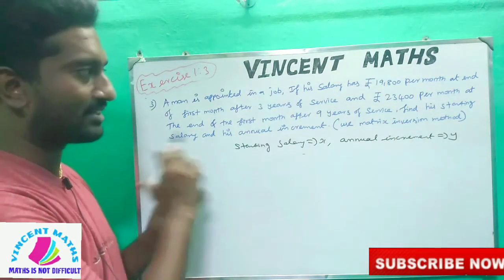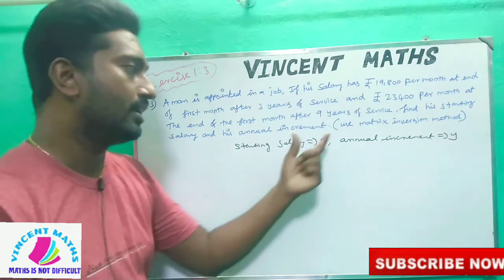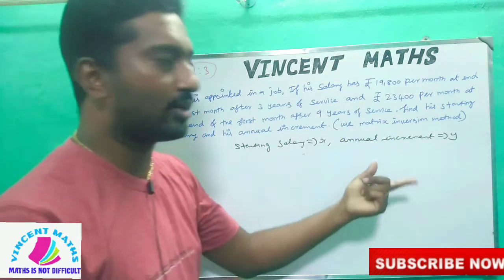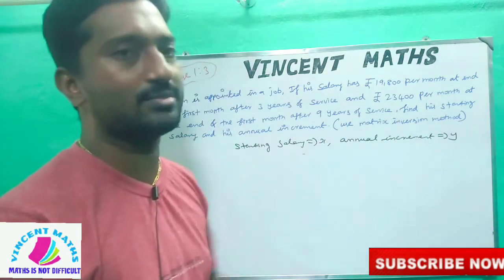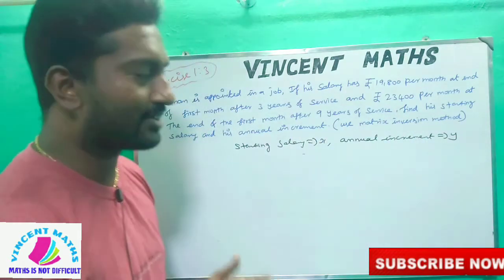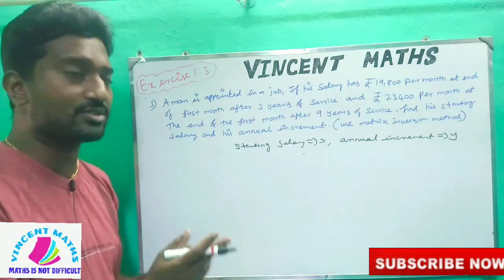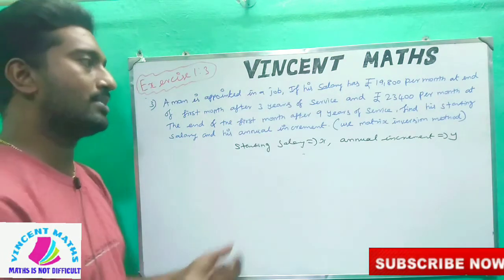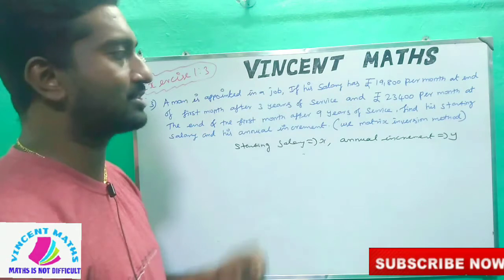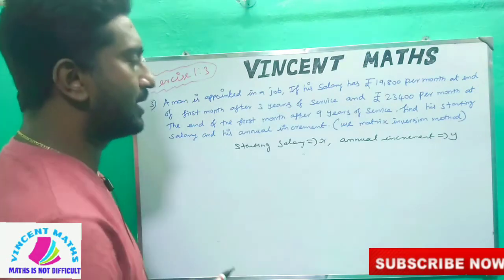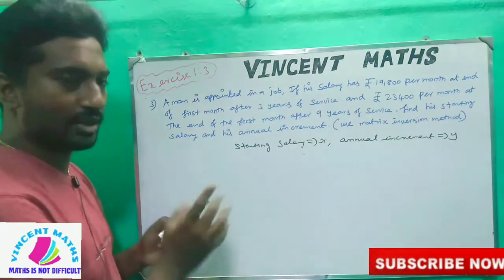We will convert the problem into equations in bracket form and use the matrix inversion method. We will form 2 or 3 equations and take them in matrix format, with starting salary as row 1 and increment as row 2.